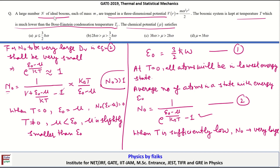When temperature is not equal to zero, μ is smaller than E₀. This ensures that all atoms are in the ground state. Since the system is below the Bose-Einstein condensation temperature, the chemical potential satisfies μ ≤ E₀ = (3/2)ℏω. Therefore, we conclude that option A is the correct answer.